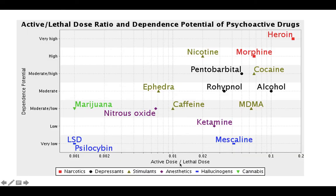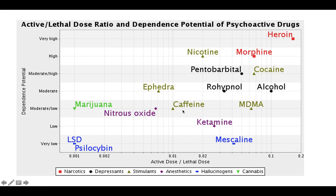Looking at a graph of lethal dose ratio versus dependence potential for different psychoactive drugs: heroin has a very high lethal dose and is also very highly addictive—extremely dangerous because it is addictive and doesn't take much to kill you. LSD, on the other end, is not nearly as addictive and has a much smaller lethal dose. There is a relationship between addictiveness and the dosage required to kill you. I would encourage you to avoid all of these drugs, including caffeine, nicotine, and alcohol.